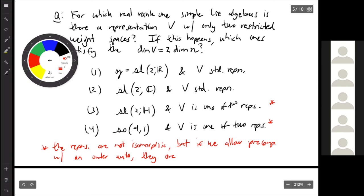Although the two representations in the last two cases are not isomorphic, if we allow pre-composition with an outer automorphism, they are isomorphic in that way. That's where I intended to get to today. Thank you for your attention, and if you have any questions I'll be happy to answer them.